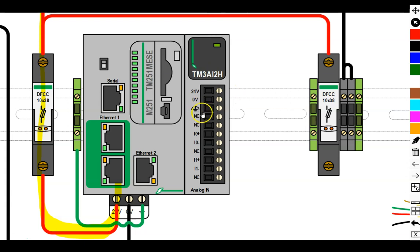We have the 24 volt, zero volt, the protective earth, the NC NC, and then the positive, negative input zero, and then the positive, negative input one that we have off of there as well.